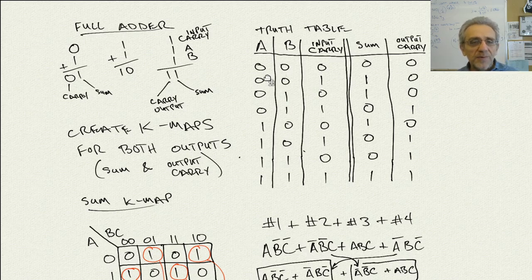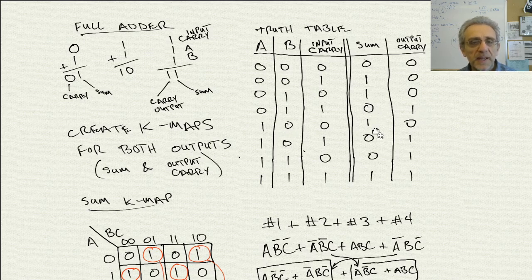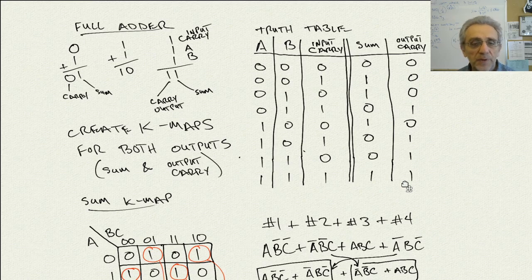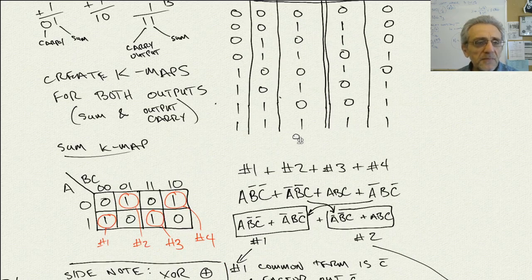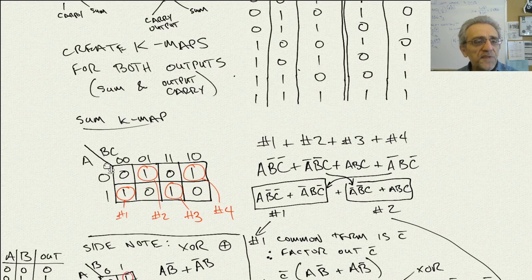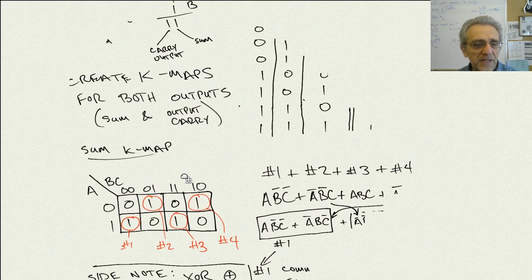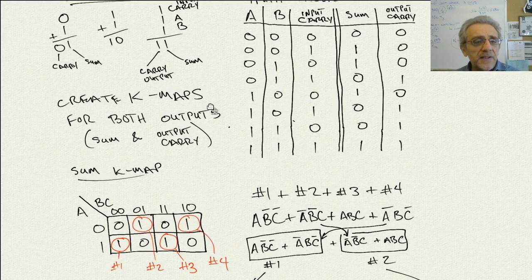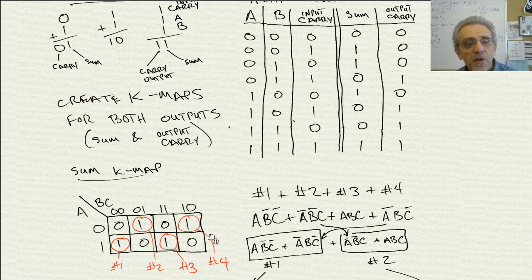When we create the truth table: 0,0,0 gives sum 0 and carry 0. We have to create a separate K-map for the sum column and a separate one for the carry output column. Let's do the sum first. We set up our gray code along the top, fill in the table, and what's interesting is that unfortunately we don't end up having any pairs. For the prime implicants we need groups of 1, 2, or 4, but we don't have a group of 2 because none are right next to each other — they're all on diagonals.